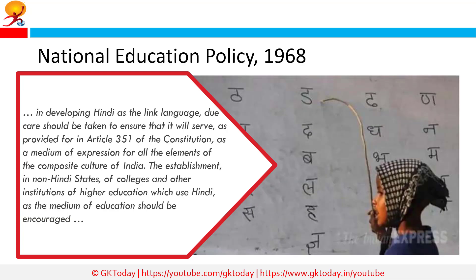What did the National Education Policy 1968 say on promotion of Hindi as the link language? On promotion of Hindi, the National Education Policy of 1968 said every effort should be made to promote the language, and that in developing Hindi as the link language, due care should be taken to ensure that it will serve and provide for, as mentioned in Article 351 of the Constitution, as a medium of expression for all the elements of composite culture of India. The establishment in non-Hindi states of colleges and other institutions of higher education which use Hindi as the medium of education should be encouraged.